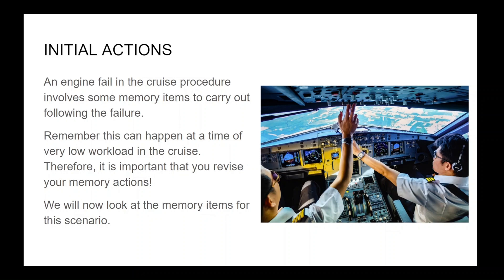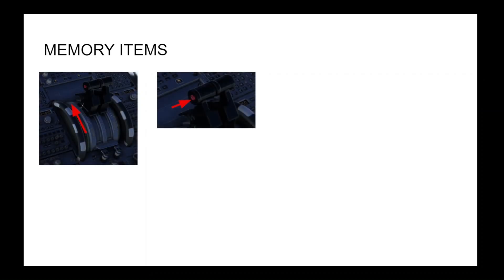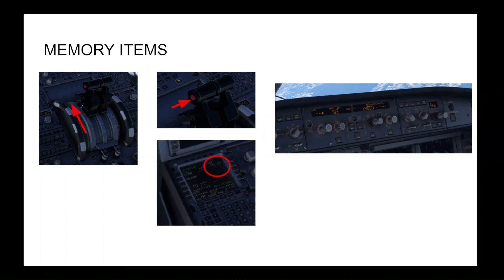Following a failure in the cruise, the pilot flying must move the thrust levers to MCT, disconnect the auto thrust using the instinctive disconnect button, set a heading that is appropriate and off course, and find the engine out recovery altitude in the MCDU by clicking on PROG. Then set the speed target — depending on the strategy, this will be Mach 0.78, 300 knots, or green dot — and finally set the engine out recovery altitude. Then the PF can ask for the ECAM actions.